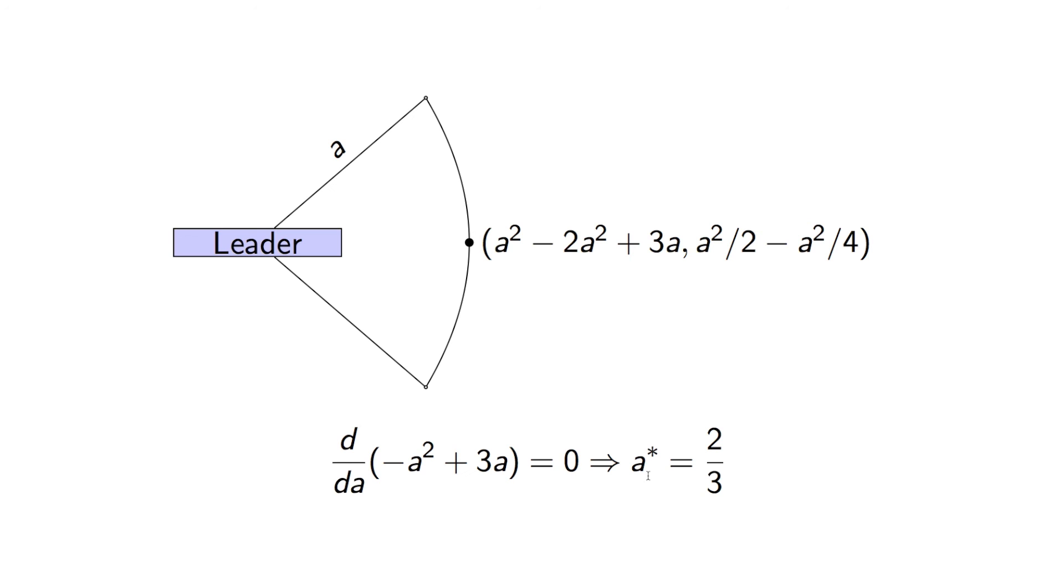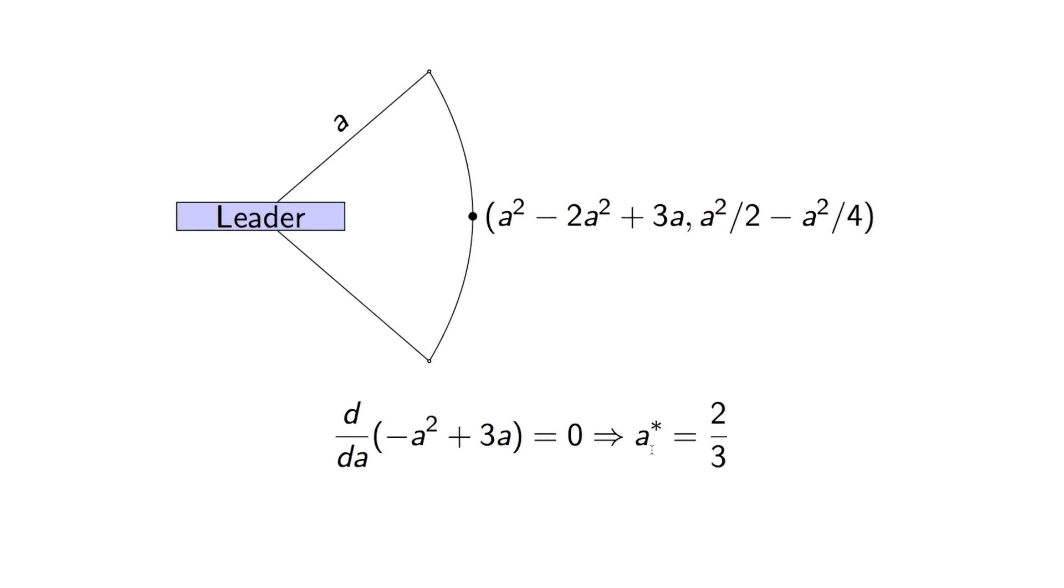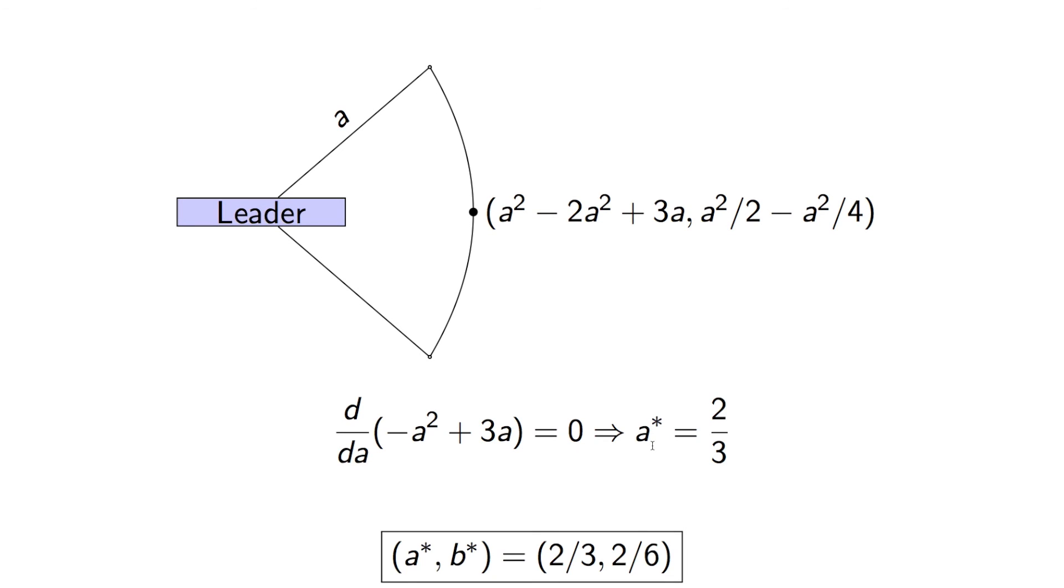And from there, we have the Nash equilibrium, which is A star, B star equals 2 thirds, 2 sixths. Sorry, 2 thirds, 1 third. Because remember, B star was equal to a half of A star.